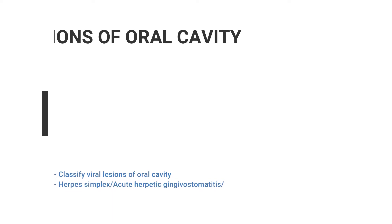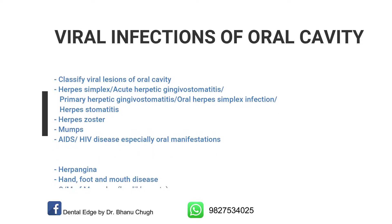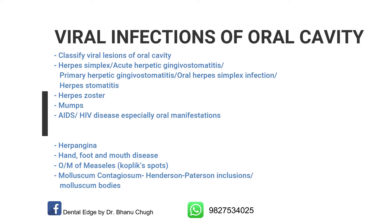Let's get started with today's topic. Starting with viral infections of the oral cavity — you can be asked to classify viral lesions of the oral cavity. Then there can be a question on herpes simplex, acute herpetic gingival stomatitis, primary herpetic gingival stomatitis, or herpes stomatitis. There can also be questions on herpes zoster, mumps, and AIDS or HIV disease — especially on the oral manifestations of AIDS or HIV, so prepare them very nicely.